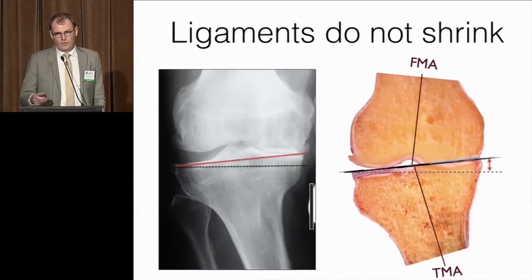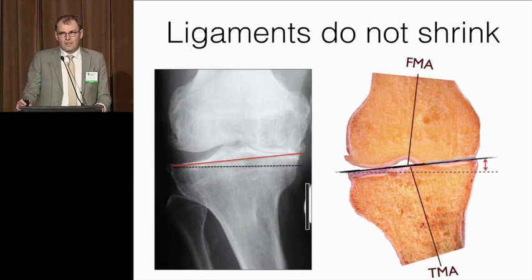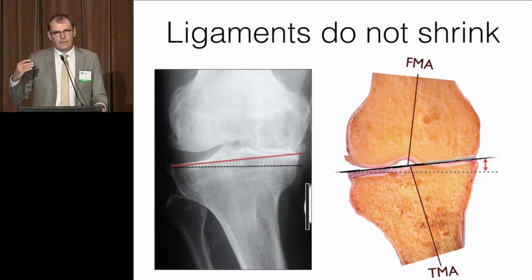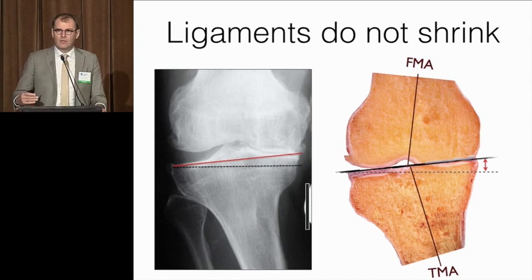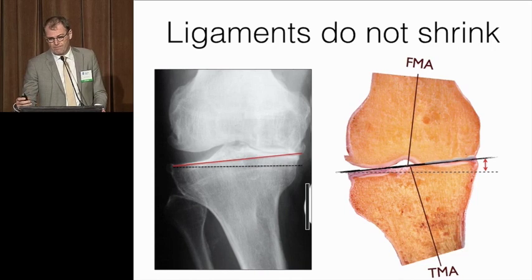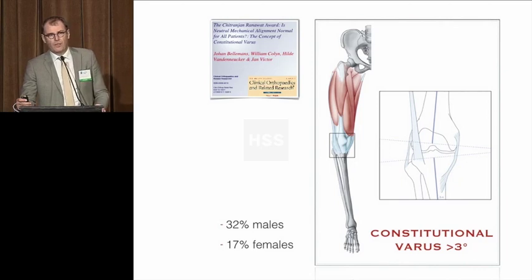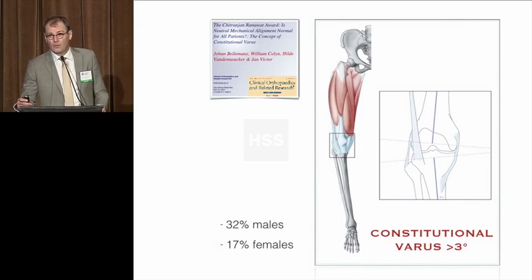The premise for the study that Steve has just shown you is the fact that we assume that ligaments do not shrink, and we think that as we deal with this patient and restore the volume on the medial side, we'll put the patient back into his native alignment, which will not necessarily be a neutral alignment. We looked at a cohort of 250 subjects and found that about one-third of the males and a little less than one-fifth of the females had constitutional varus of more than three degrees.